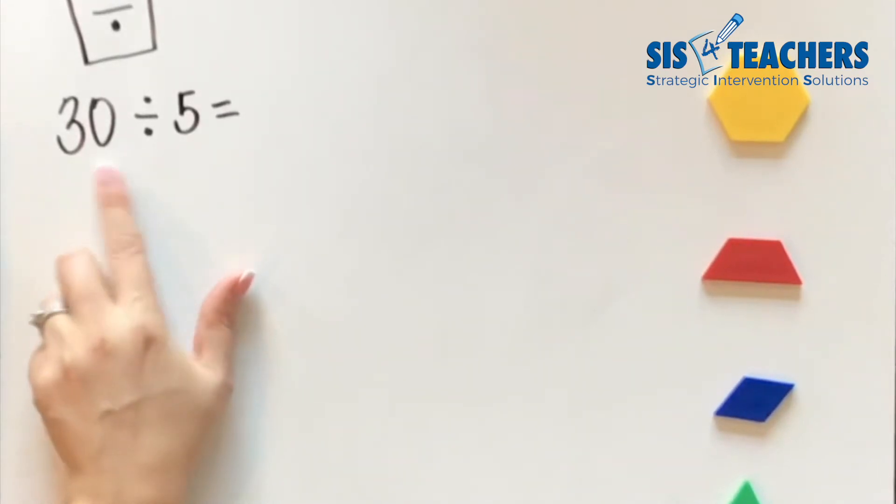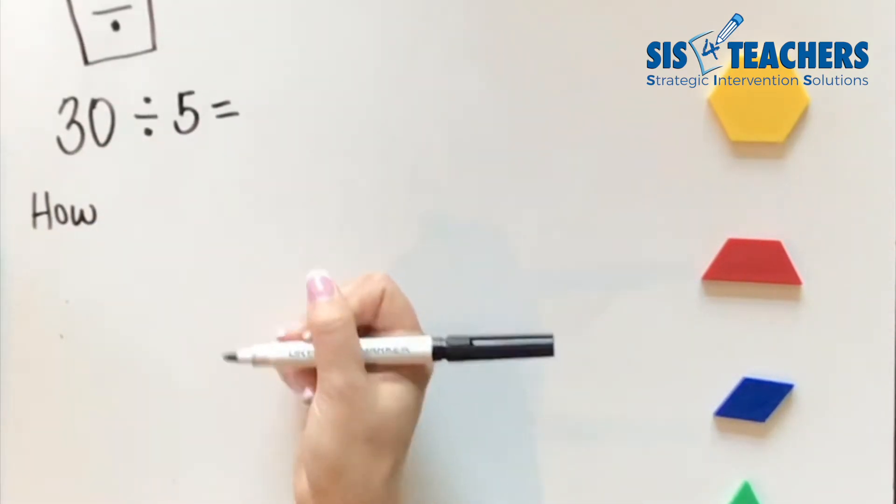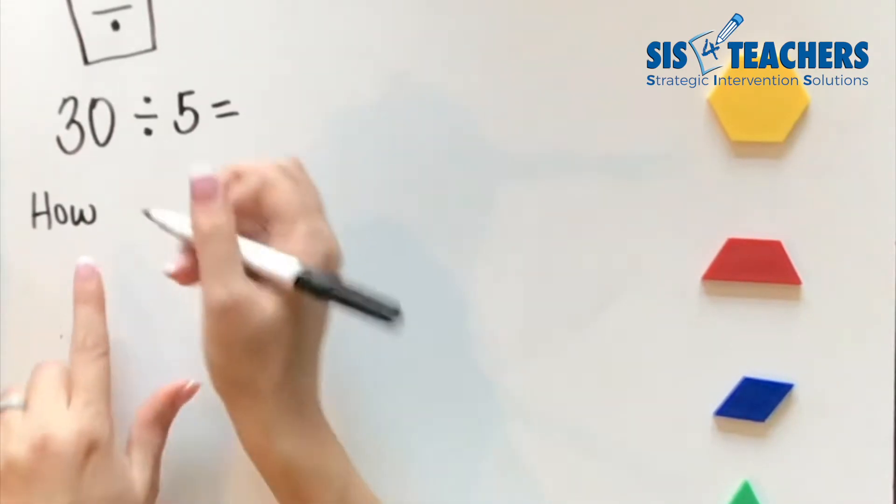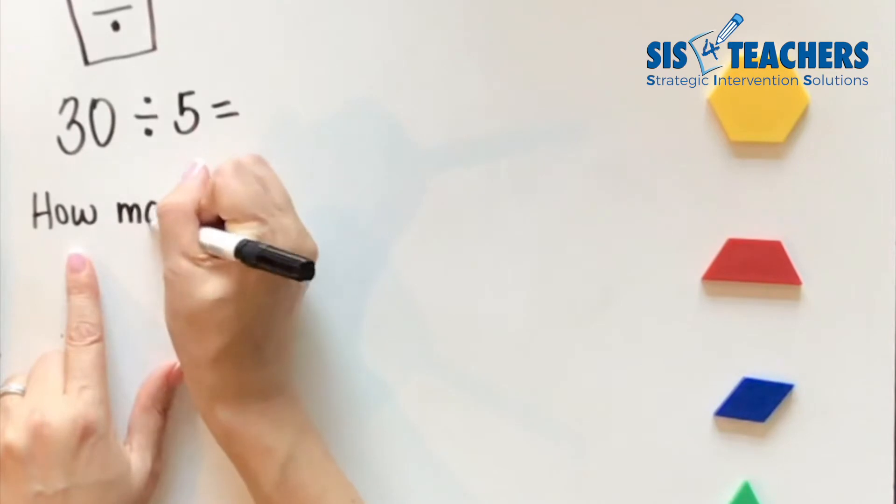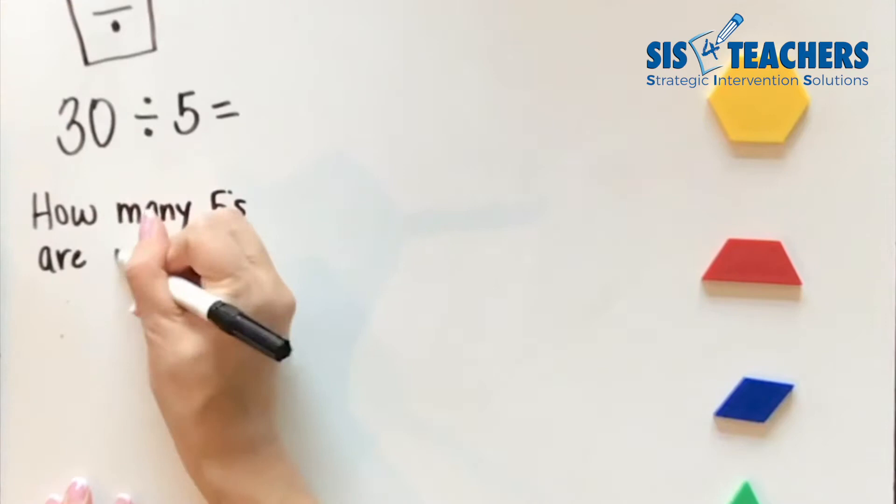If I were to write this statement, 30 divided by 5, what does that mean? It's really wanting to know, when I'm looking at this, some kids might say it means divide, some kids might even be able to solve the problem and give the answer, but it really wants to know how many fives are in 30.